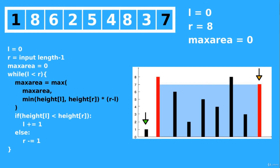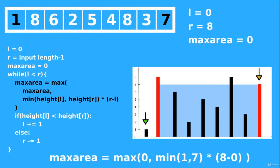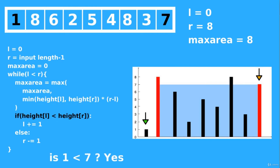First, we find whether the area of the current rectangle is bigger than our current max. That's the maximum between zero and the result of multiplying the minimum of 1 and 7 — the height — by the width, which is 8 minus 0. The result is 8, which is bigger than zero, so we update our best area to 8.